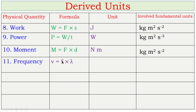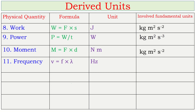Next: frequency. From wave equation: velocity = frequency × wavelength, so frequency = velocity ÷ wavelength. Velocity is in meter per second and wavelength in meter; meters cancel, leaving 1/second. Named after scientist Hertz, its unit is hertz (Hz). The fundamental unit involved is only second, in the denominator — written as s⁻¹.